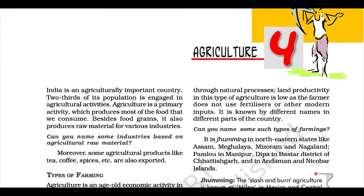Jute. It is known as the golden fiber. Jute grows well on well-drained, fertile soils in the flood plains where soils are renewed every year. High temperature is required during the time of growth. West Bengal, Bihar, Assam, Odisha, and Meghalaya are the major jute-producing states. It is used in making gunny bags, mats, ropes, yarns, carpets, and other artifacts. Due to its high cost, it is losing market to synthetic fibers and packing materials, particularly nylon.